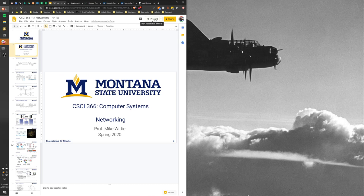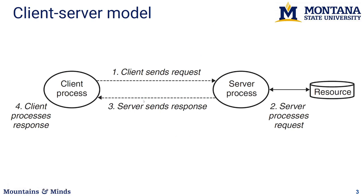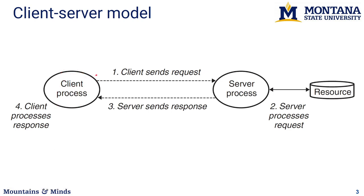The most common type of network application you're going to build — which is also one you will build for your battleship project — is a client-server application. There are usually many clients; these are the end devices, and they send requests to the server, which may do some processing, maybe connect with database resources, and then return a response to the client.